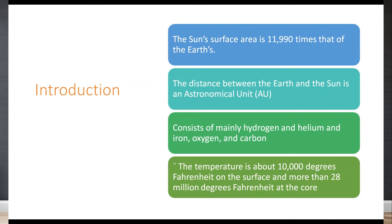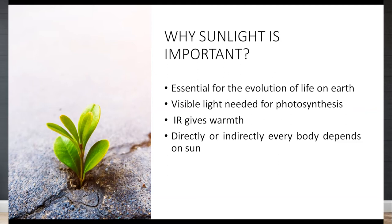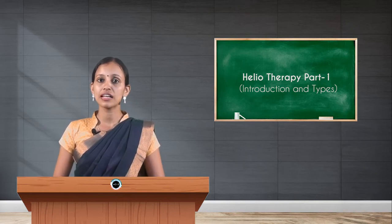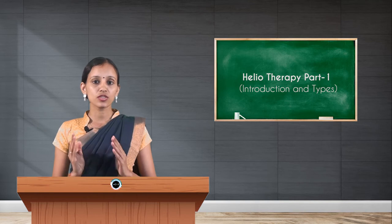All living creatures on earth need sunlight for their normal functioning — whether plants, animals, or humans. Sunlight is essential for the evolution of life on earth. Visible light is mainly needed for the photosynthesis process in plants, and the sunlight spectrum is mainly composed of infrared light, which gives a warm sensation to the body. Directly or indirectly, everyone depends on natural sunlight for optimum functioning.